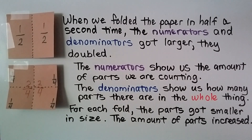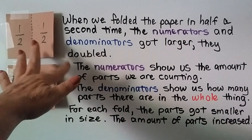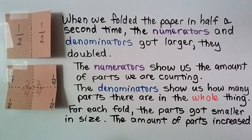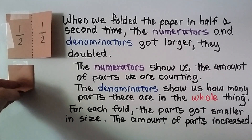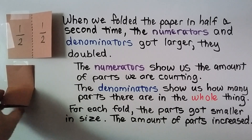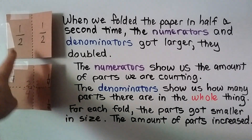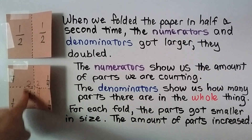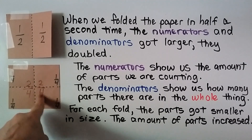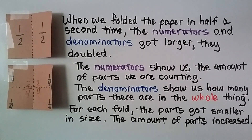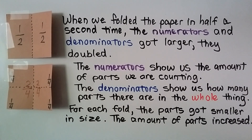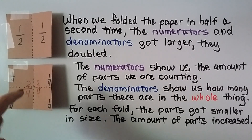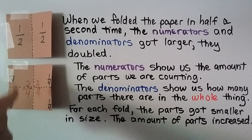When we folded the paper in half a second time, the numerators and denominators got larger — they doubled. So here we folded it in half one time, so we have a half and a half. When we folded it in half a second time, look at the numerator and denominator: instead of one half, we now have two-fourths for this whole part. The numerators show us the amount of parts we are counting — that's two parts. And the denominators show us how many parts there are in the whole thing — there are four parts, so this part is two of four parts. It's two-fourths.